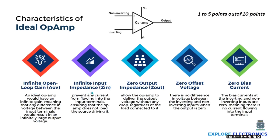The second characteristic is infinite input impedance. Input impedance means the resistance at the input side is maximum, so we say infinite impedance at the input side. It means the op-amp will draw no current — so current into the op-amp will be zero.